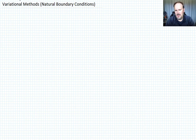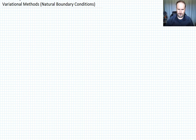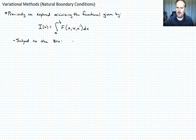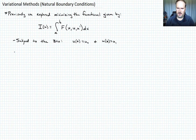In this lecture I want to introduce how we handle natural boundary conditions. So far we've talked about geometric or essential boundary conditions, so let me remind you of those first. Previously we explored minimizing the functional i of u, given by the integral from a to b of some integrand f of x, u, and u prime dx, subject to the boundary conditions that u of a is equal to u naught and u of b is equal to u1. We call these essential or geometric boundary conditions.